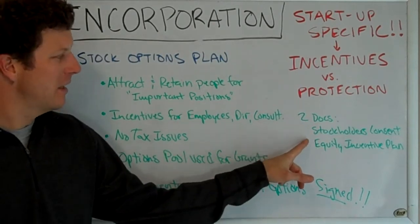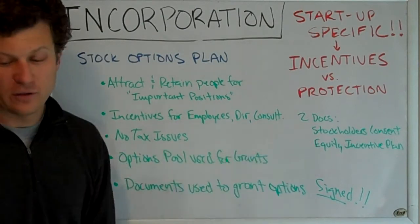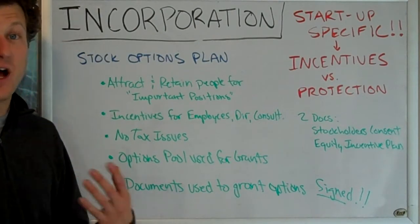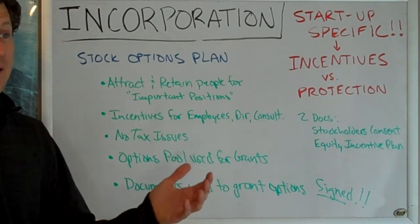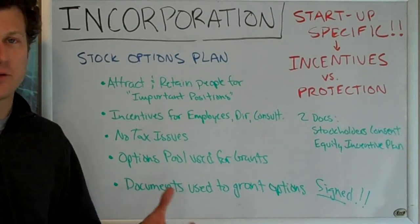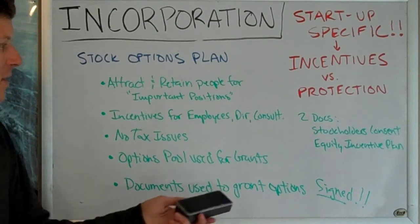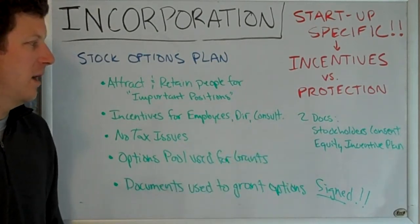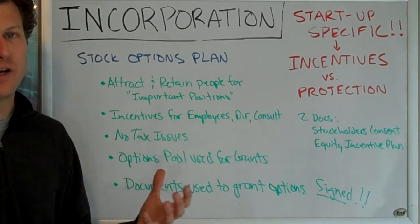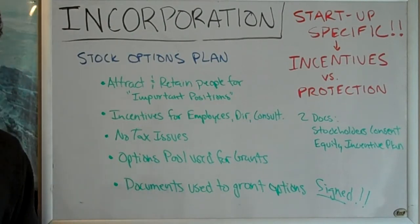There are two documents that make up this stock options plan. The first is a stockholder's consent document, which essentially says that the stockholders agree to create an options plan and allow the directors, officers, and board to use the options plan by whatever means they deem necessary. The other is called an equity incentive plan, which sets out the rules governing how your plan is going to work and the reason for its existence.